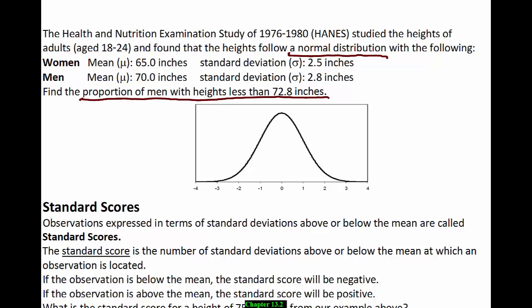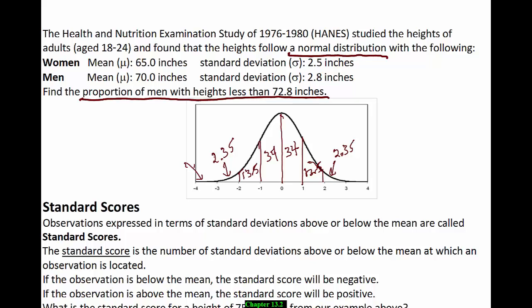The first thing I'm going to do is label my areas: 34% here and 34% here, 13.5 on each side of that, then 2.35 and 2.35, and 0.15 on each tail. Now we can label in the values that actually change according to each question.